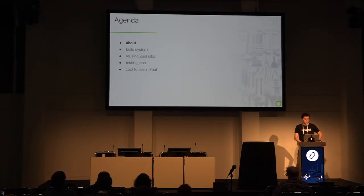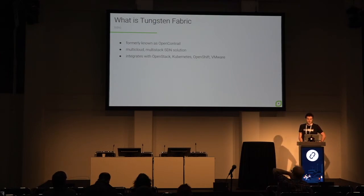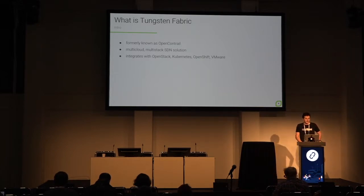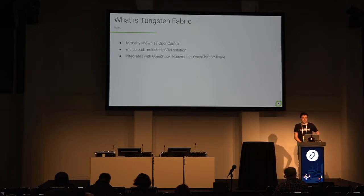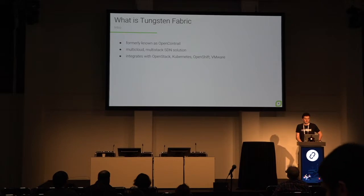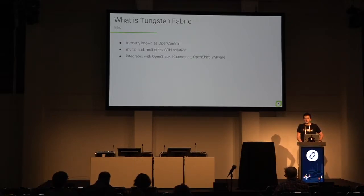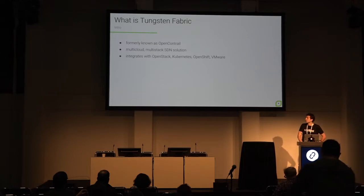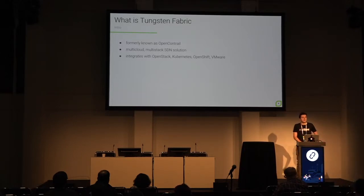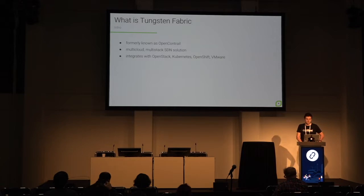Let's start with some background about our project. Tungsten Fabric — some of you may know it under the former name OpenContrail — is an SDN framework that is multi-stack, integrating with many kinds of workload orchestrators. The primary one is OpenStack, but we also provide virtual networking for Kubernetes, OpenShift, VMware, Hyper-V, and public clouds. Because we integrate with OpenStack, we face similar challenges to the OpenStack CI, needing to test the software against different versions of OpenStack.